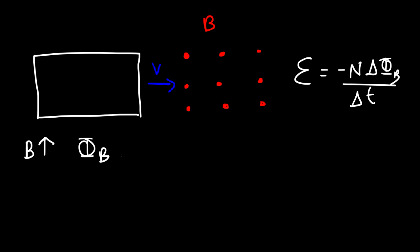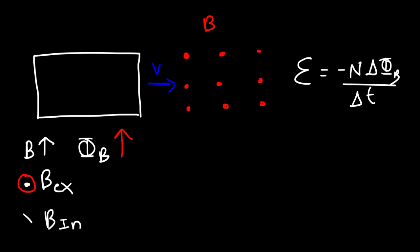That negative sign tells us it's opposite to the original change in flux. So if the flux is increasing, the induced EMF will give rise to a current that will create a magnetic field in opposition to this one. The external magnetic field is out of the page, and the induced current is going to try to oppose the increase in flux by creating an induced magnetic field that is going into the page — everywhere inside the coil.